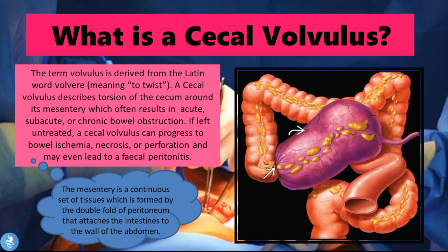The mesentery is a continuous set of tissues formed by the double fold of peritoneum that attaches the intestines to the wall of the abdomen. What actually happens in a cecal volvulus is that we have a twisting of the cecum around its mesentery — this double fold of peritoneum that anchors the bowel wall to the abdominal cavity. Because of this twist, none of the content in the cecum is able to pass through the large bowel. This causes a significant problem, as the small intestine attaches to the cecum, which is the first part of the large bowel.